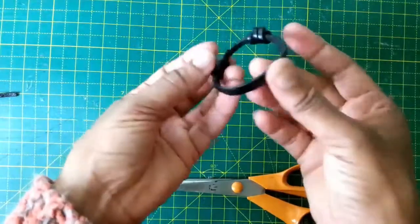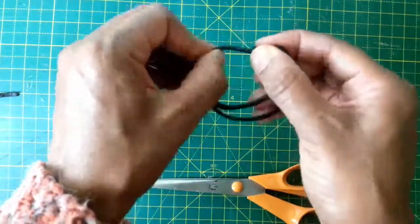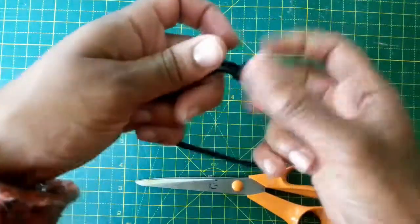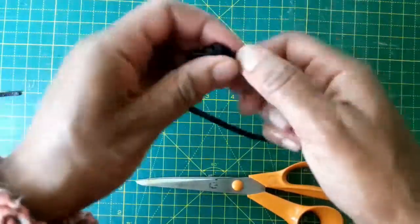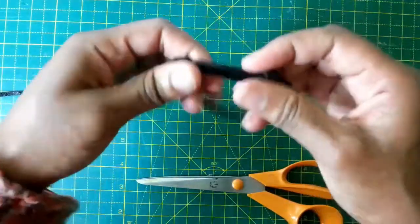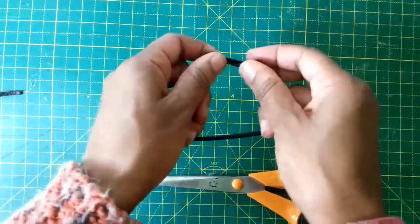Now, that looks super, super small but trust me it's not. We're just going to pull the knots. Tighten up those knots at the end and there you have your bracelet.